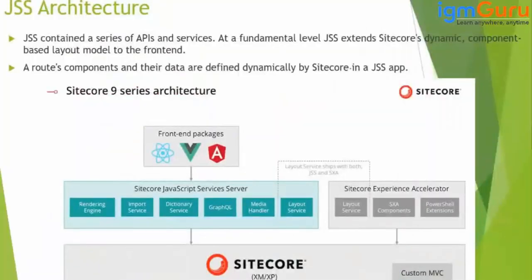Before starting anything on Sitecore JSS, let's try to understand its architecture and how it's going to work. If you want to install Sitecore JSS, first you need to install Sitecore — it can be your XP or XM — where you can create your website using MVC. XP is the base product you have to install.